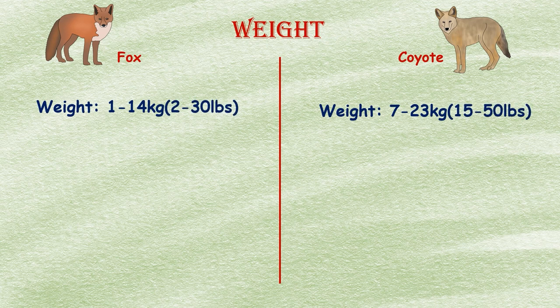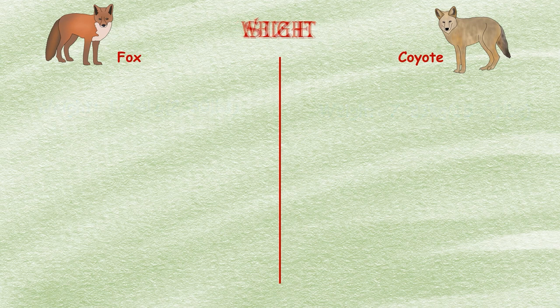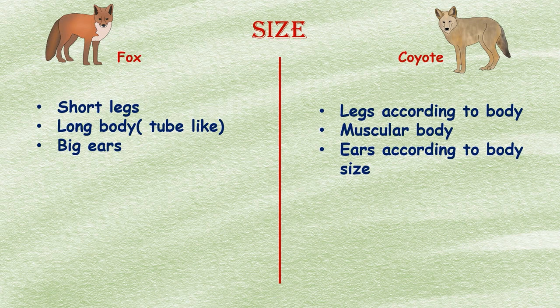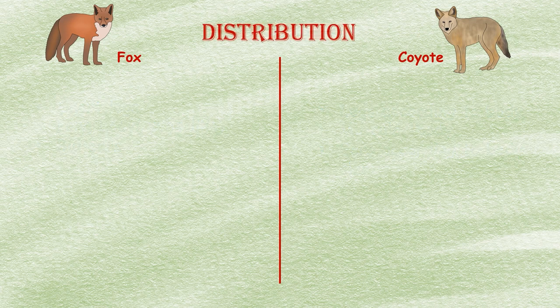The average weight of a fox is one to fourteen kilograms, or two to thirty pounds, which differs according to the fox's age. A coyote weighs around seven to twenty-three kilograms, or fifteen to fifty pounds. As the coyote is longer than the fox, their weight is also more. Foxes have short legs and long tube-like bodies with big ears, while coyotes have shorter legs with muscular bodies and ears proportional to their body size.